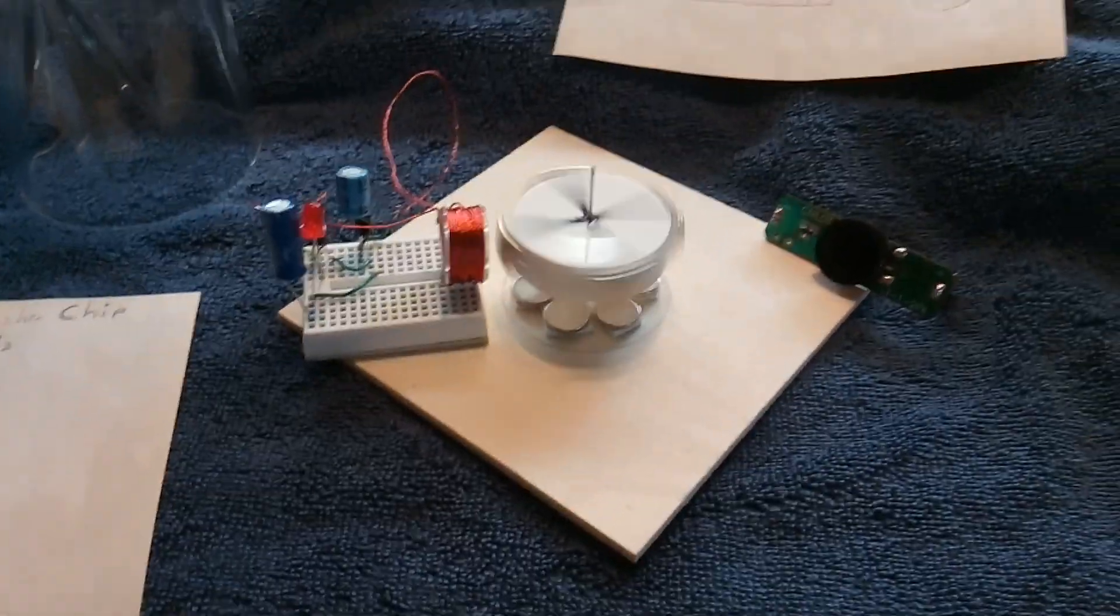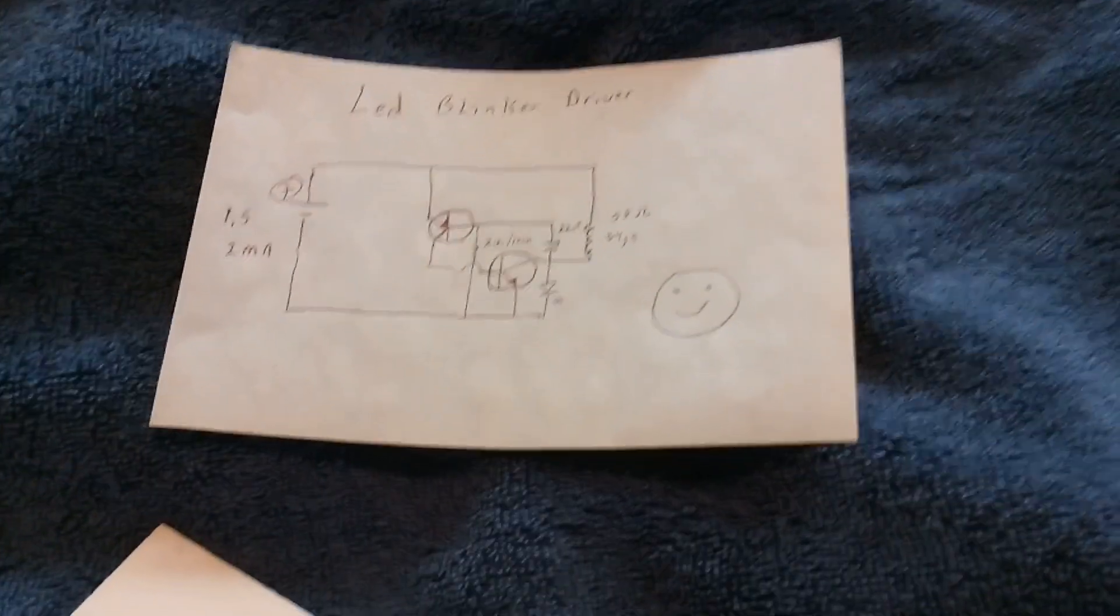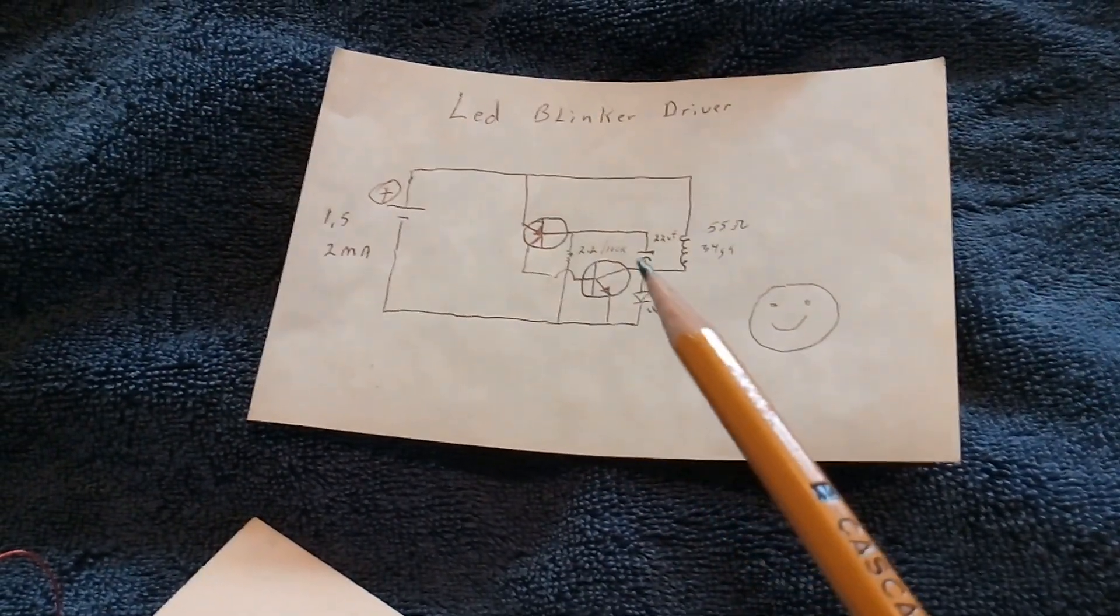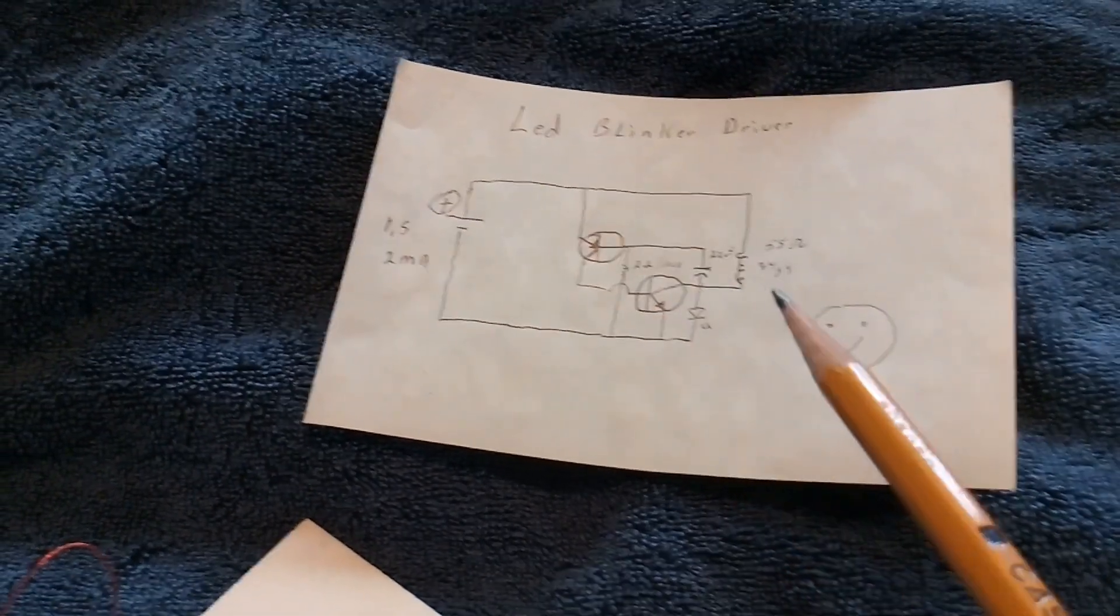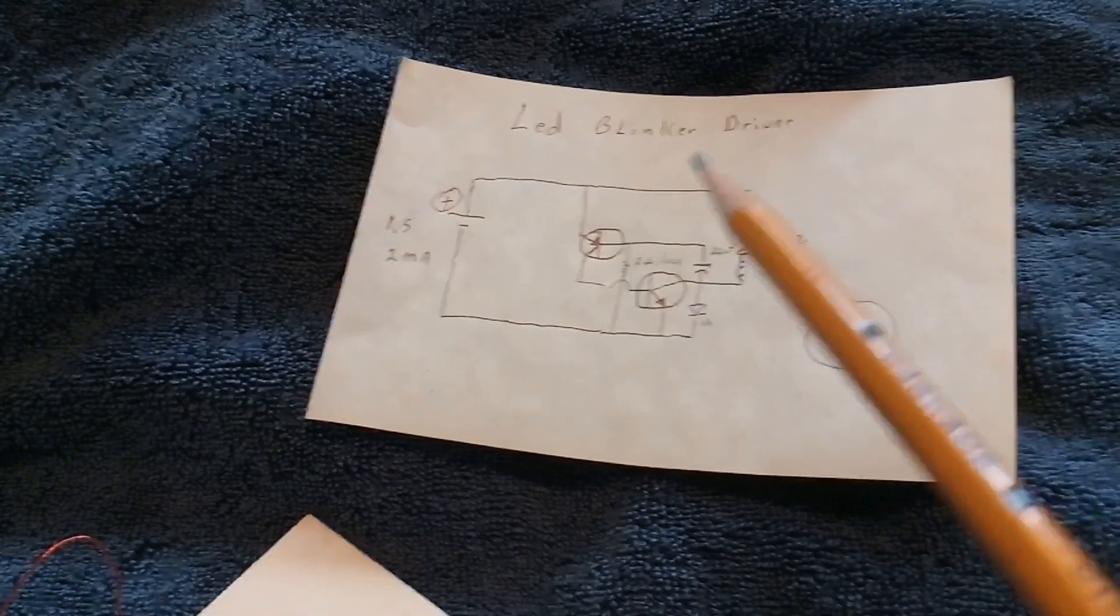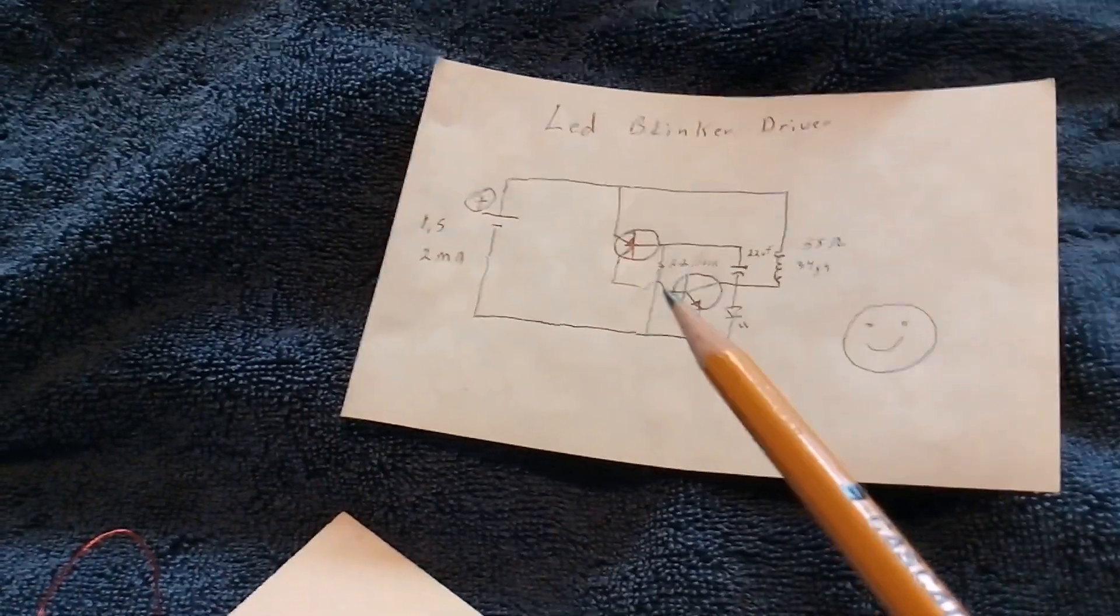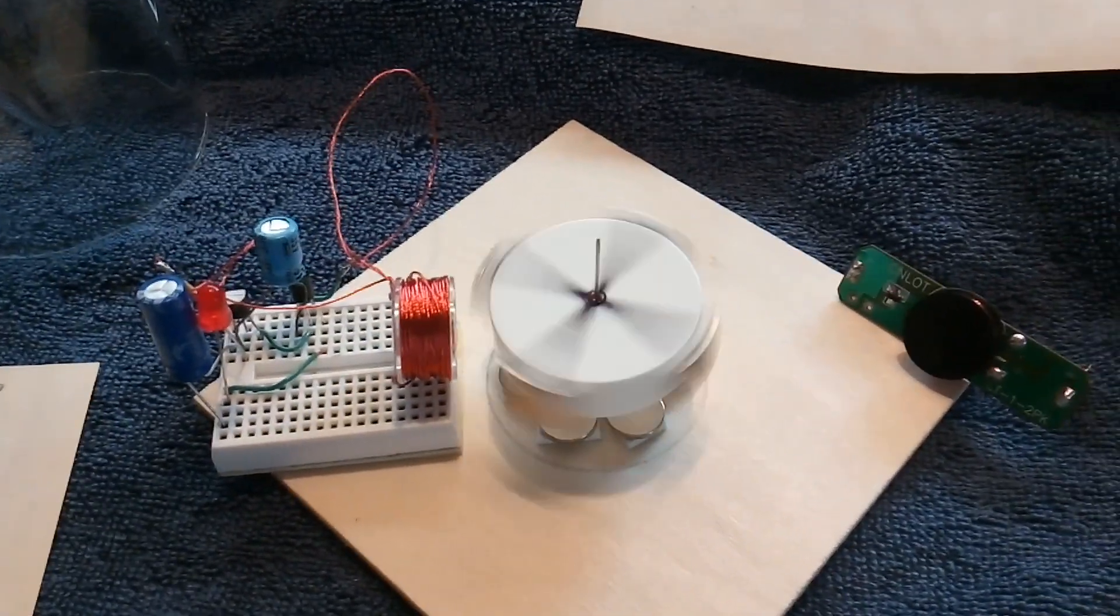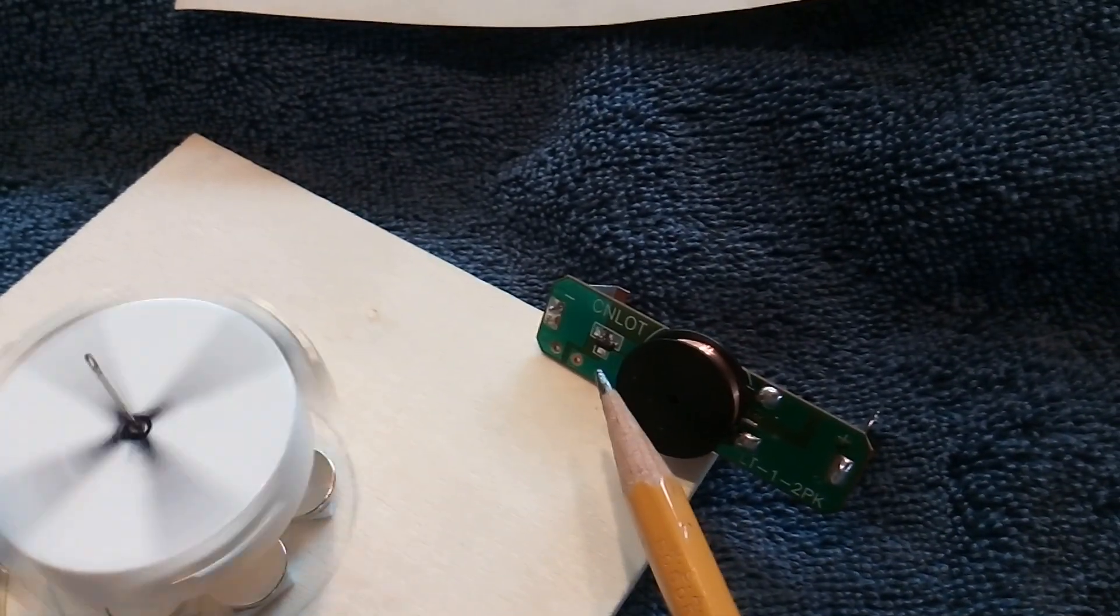And that is this LED blinker driver that is a complementary transistor that uses capacitors, resistors, two transistors, and a feedback coming from the coil. As the magnet goes around in front of the coil, it puts a feedback into the circuit which keeps the device running. And I still don't know what that little chip is right in there.